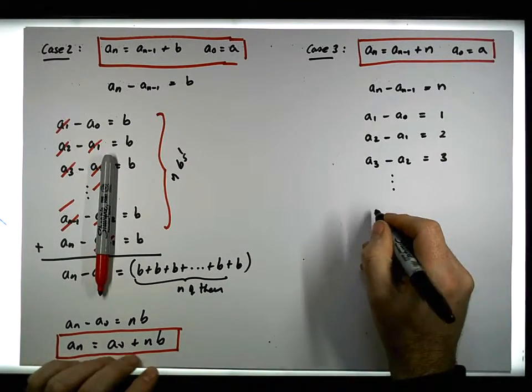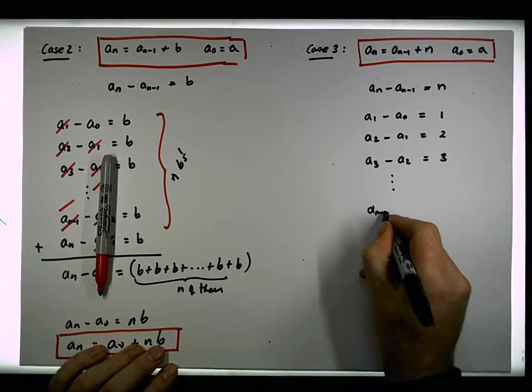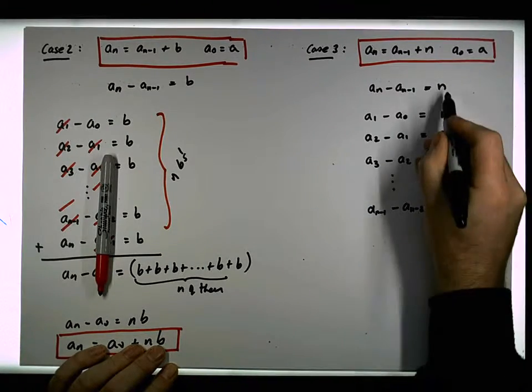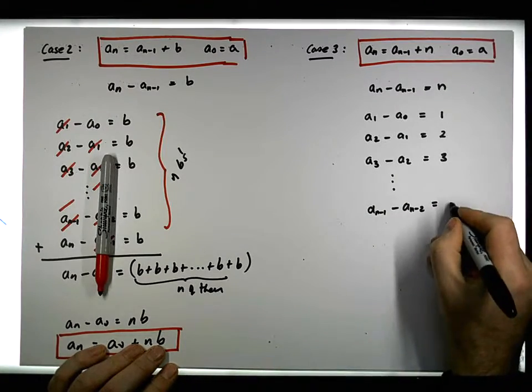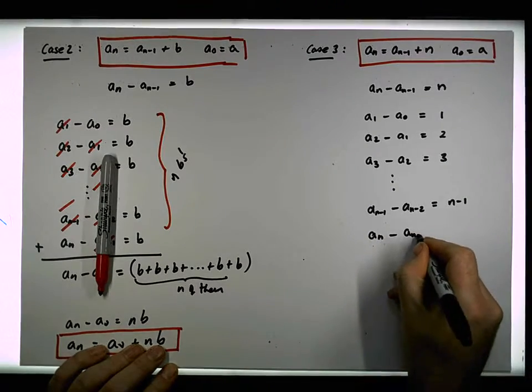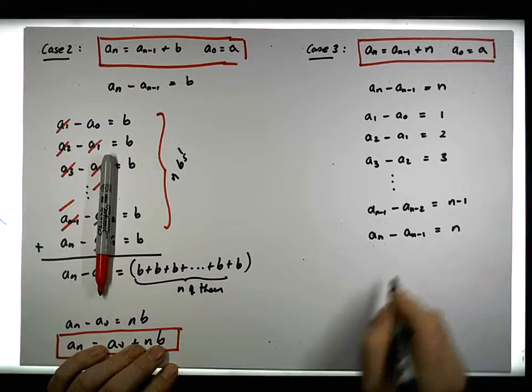And we can go down to the nth minus 1 term. We have a_{n-1} minus its previous one, a_{n-2}, must be equal to n. Well, in this case, the index is n minus 1, so it must be equal to n minus 1. And then the nth difference, a_n minus a_{n-1}, is simply equal to n.